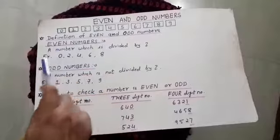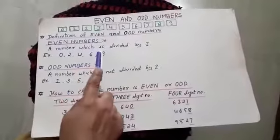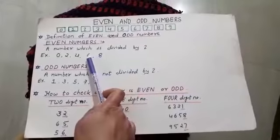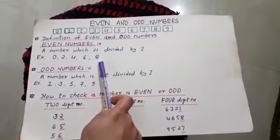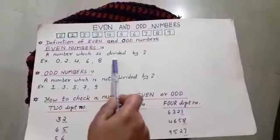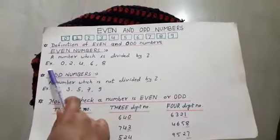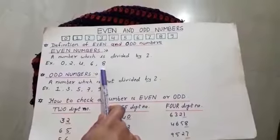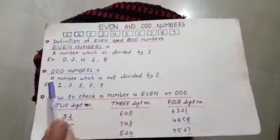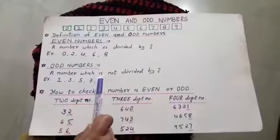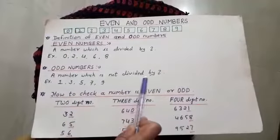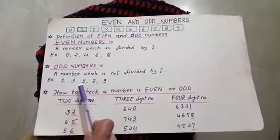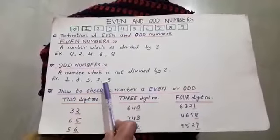Even numbers: a number which is divisible by 2. We can also say a number which appears in the table of 2. For example: 0, 2, 4, 6, 8. Odd numbers: a number which is not divisible by 2. For example: 1, 3, 5, 7, 9.